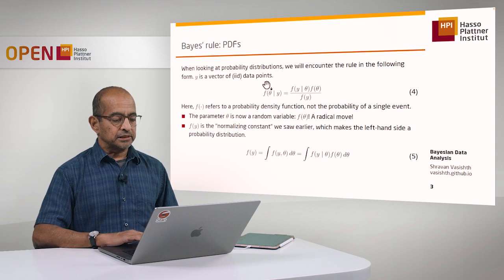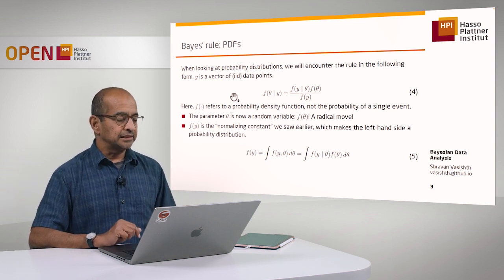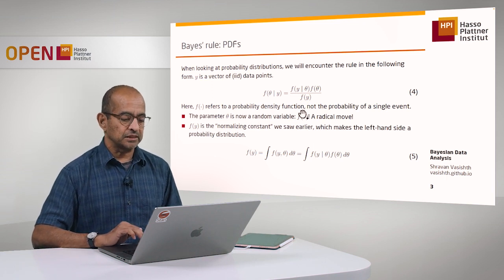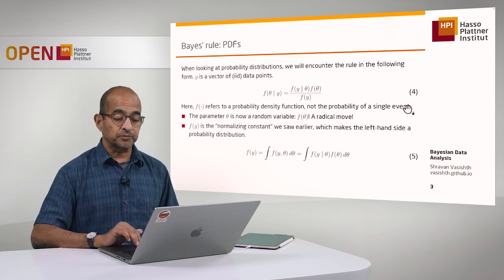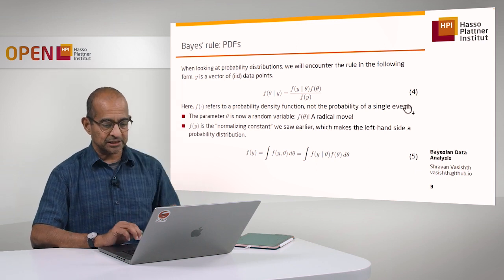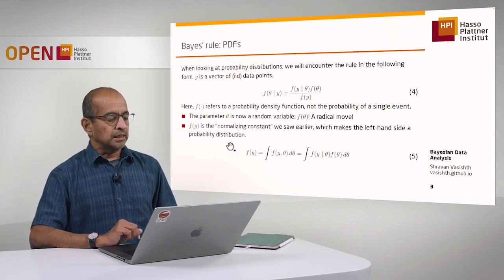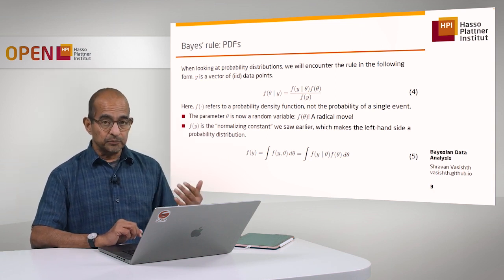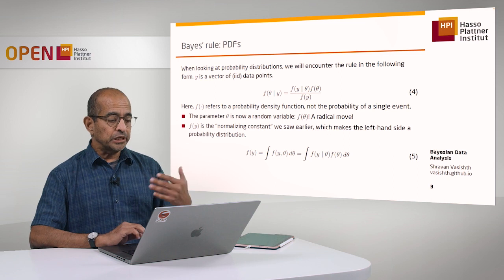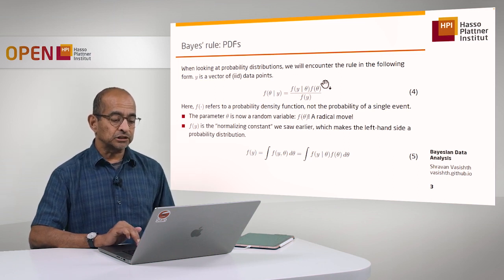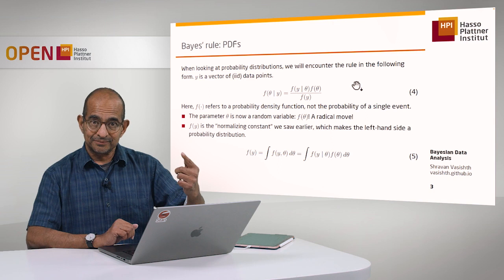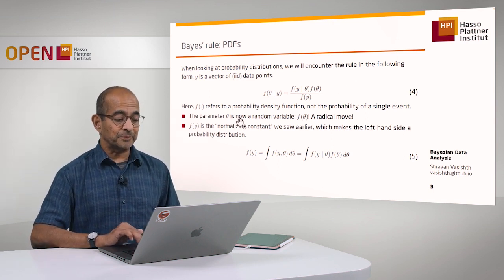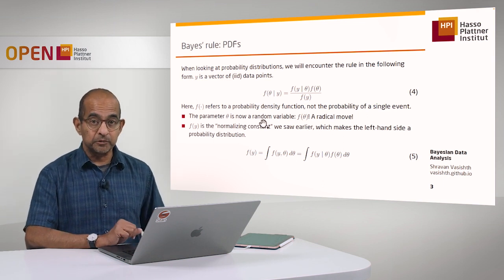Let's unpack this equation and try to understand what it's really saying. Whenever I say F(something|something), I'm referring to a probability density function — I'm not talking about the probability of a single event. Now, the amazing step — this is a very radical move — is that we are going to assign a probability density function to our parameter. The parameter has a probability density function associated with it, which means it is a random variable too.